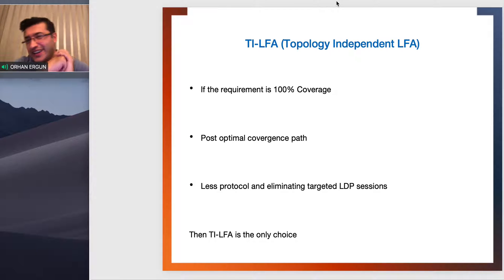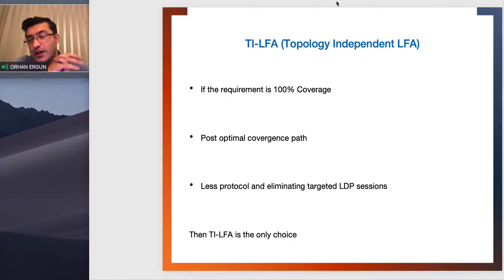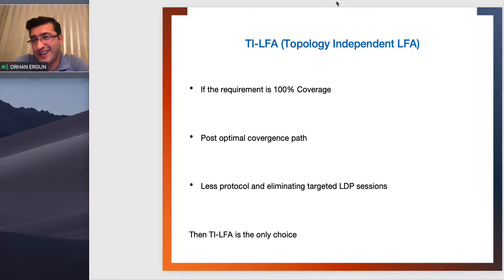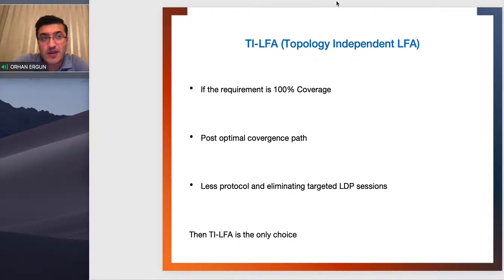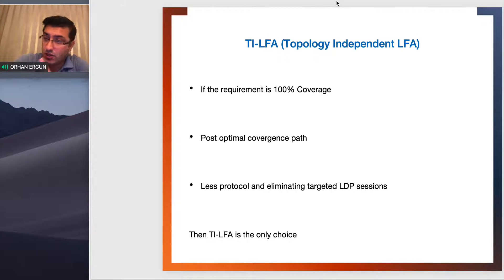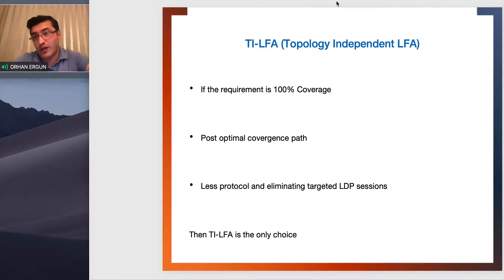Let's start with TI-LFA. So far we discussed regular LFA for link protection and per-prefix destination LFA. After that we talked about remote LFA — tunnel-based, LDP-based LSPs in Cisco, Juniper, etc. With remote LFA we understood what is P space, extended P space, Q space, and PQ node. As a conclusion, remote LFA might bring extra coverage — a bigger chance to find a loop-free backup path compared to regular LFA.